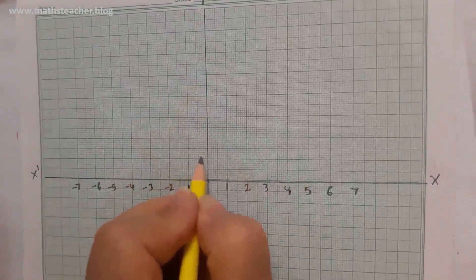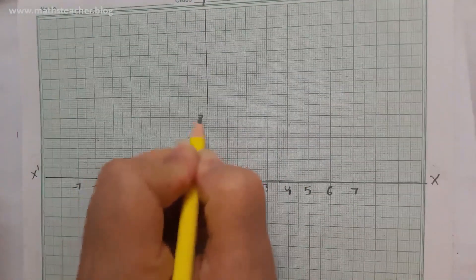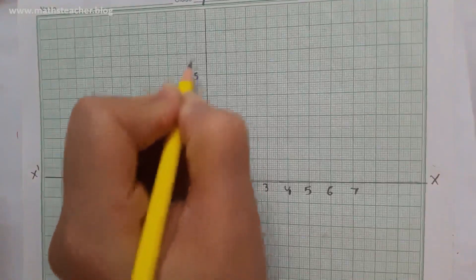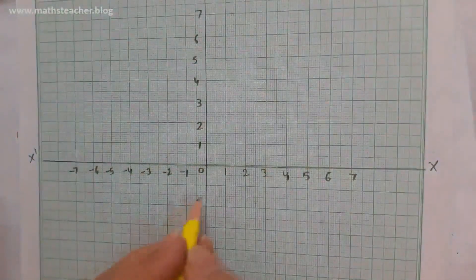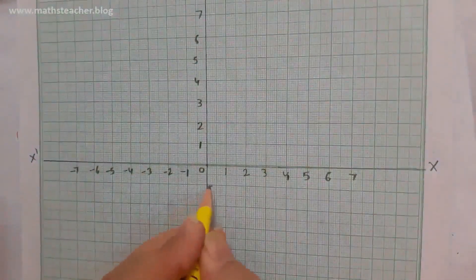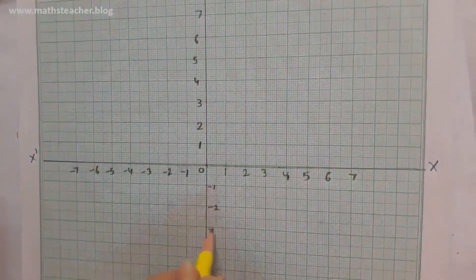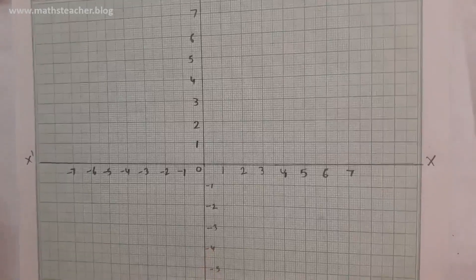The horizontal line is the x-axis, which is our number line. On the right side of the origin, numbers will be positive: 1, 2, 3, 4, 5, 6, 7. On the left side will be negative numbers: minus 1, minus 2, minus 3, minus 4, minus 5, minus 6. Similarly, on the y-axis, upper side is positive and lower side is negative. Now our axes are ready.